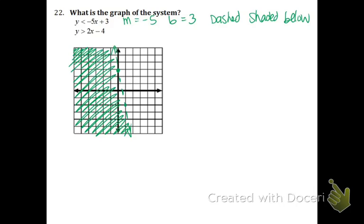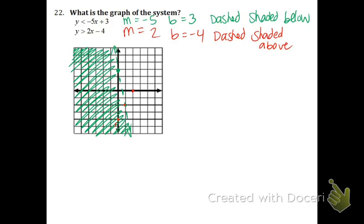Line 2 coming up. M is 2 and B is negative 4. Dashed and shaded above. Start at the negative 4 and go up 2 over 1, up 2 over 1, etc. Make it dashed and shade above. As you can see, the solution area or region is where the red and green are crossing or overlapping. Any point in that overlapping region is a solution for the system of linear inequalities.